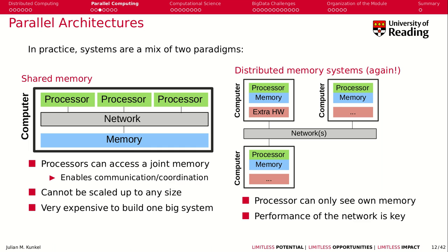In practice there are two paradigms for parallel architectures, and you see mixes of both in real cluster systems. In a shared memory system, you have one memory that can be accessed by multiple processors — the memory is shared. This computer system has internally some kind of network to allow coordinated access to memory by different processes. Your mobile device and computer nowadays are all shared memory systems with multiple cores accessing the same memory. The problem is that this architecture cannot be scaled up to any size — it's very difficult to build a 100,000-processor shared memory machine because there is always the bottleneck of memory bus access.